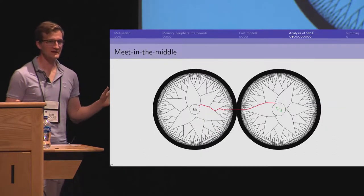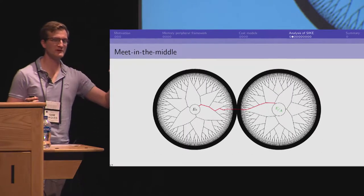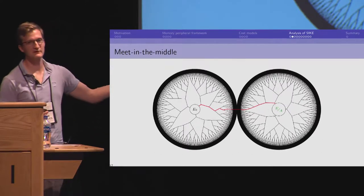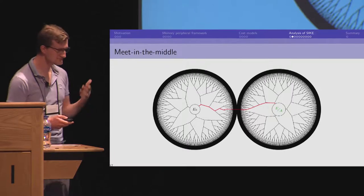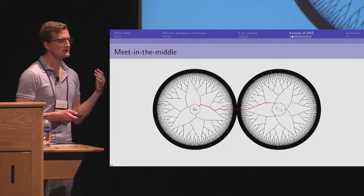So, this is vulnerable to a meet in the middle attack. We look for paths going forward from the public parameter and paths going backwards from the public key. And we look for a collision between these two paths.